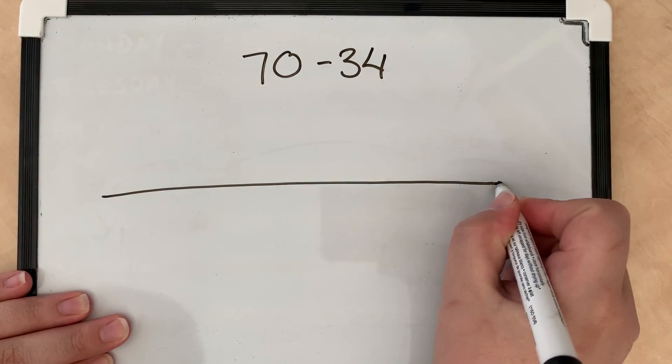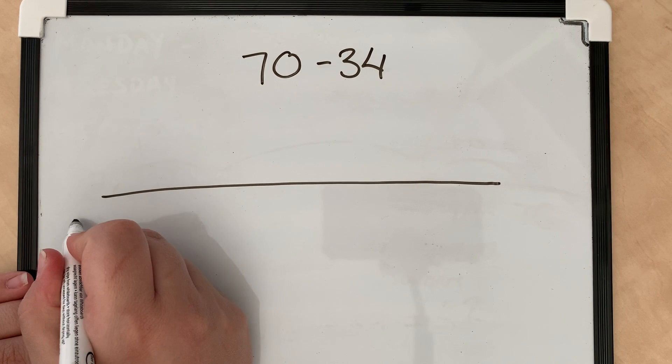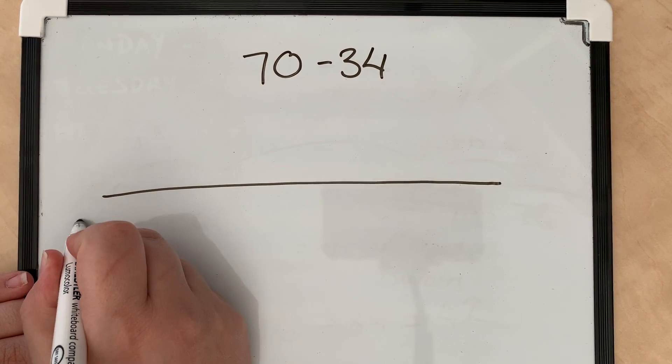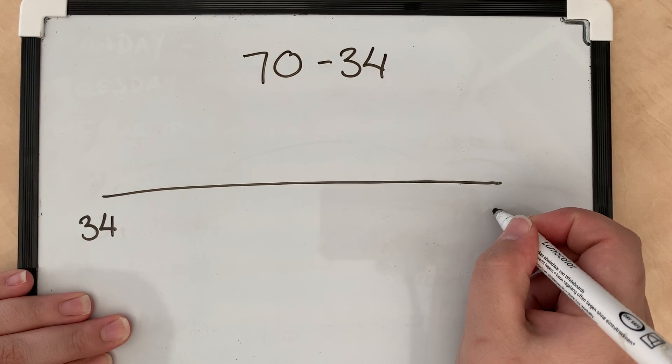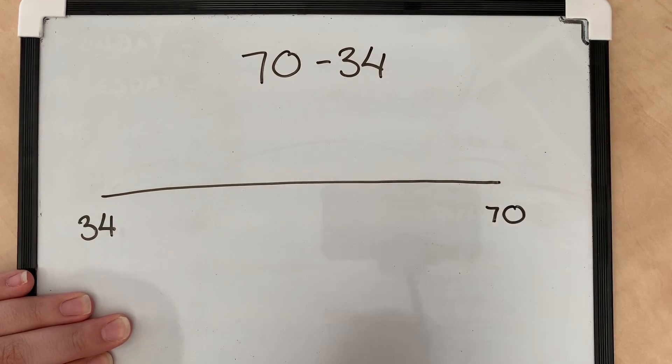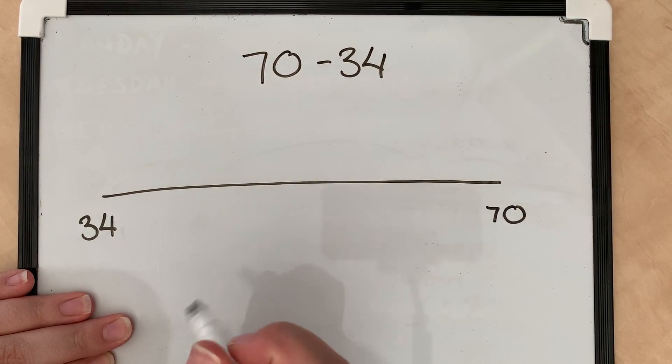At this end on the left-hand side, you're going to put your smaller number, which is 34, and at this end we're going to put our larger number, which is 70.